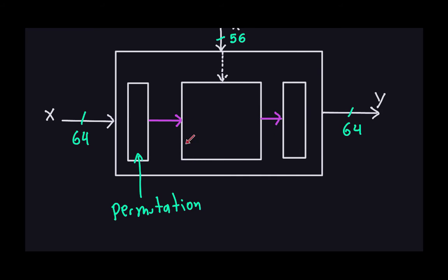I'm not going to explain what this box does just yet, because it's more complicated. What this box does is use the key to encrypt whatever block came from the permutation. After that encryption is done, which I'll explain later, the output goes through another permutation — the final permutation.